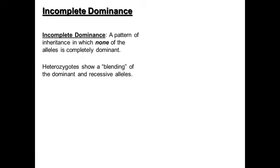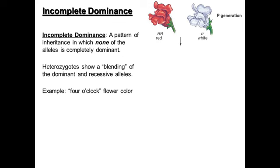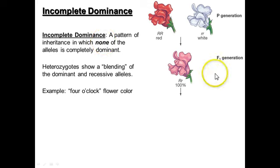Very similar but distinct is incomplete dominance. In incomplete dominance, neither allele is completely dominant, so any heterozygous individual shows a blending of the two alleles. One of the most famous examples is the four o'clock flower, which comes in three colors. Red is homozygous dominant, white is homozygous recessive, and crossing red with white produces all pink offspring. It's called incomplete dominance because there is some red coloring, but it's not completely dominant.